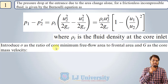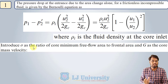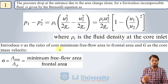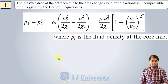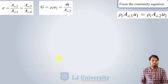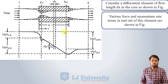Now we introduce a term sigma, which is the ratio of the minimum free flow area to the frontal area. The core mass velocity G is defined as before. From the figure, the minimum area is A2 and the frontal area is A1, so sigma = A2/A1 (or A3/A4 on the right-hand side). The mass flux velocity G = ṁ/A2 = ρi·u2.